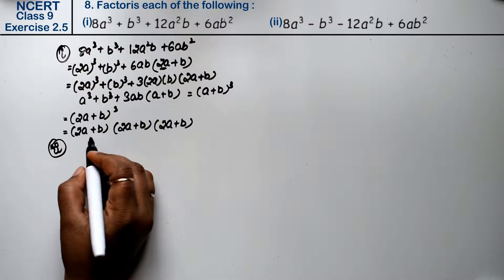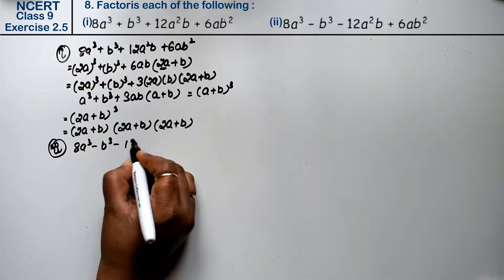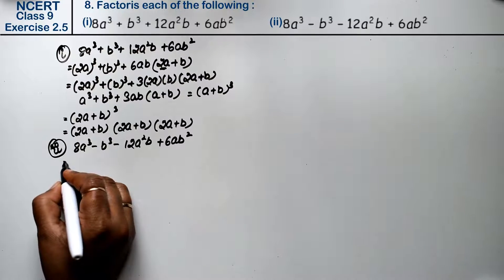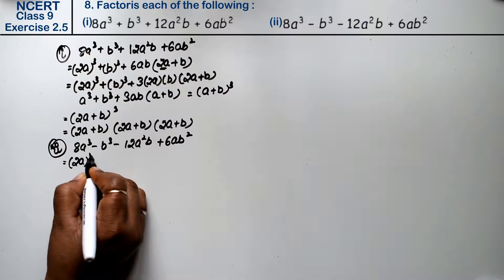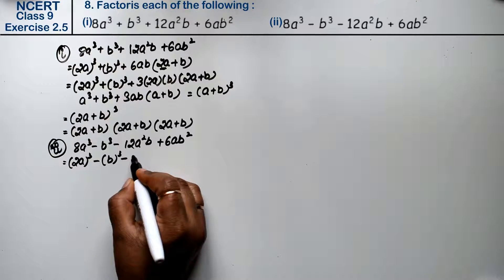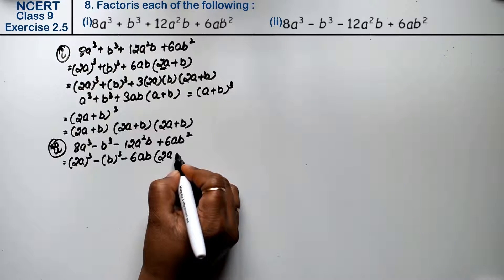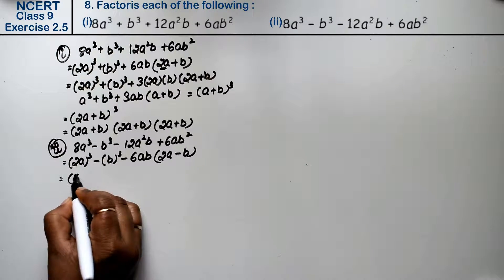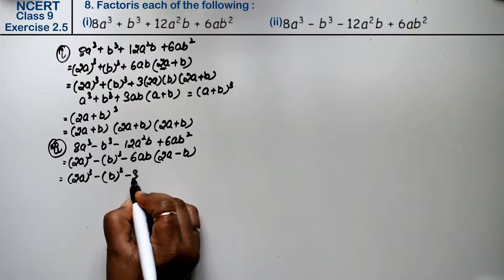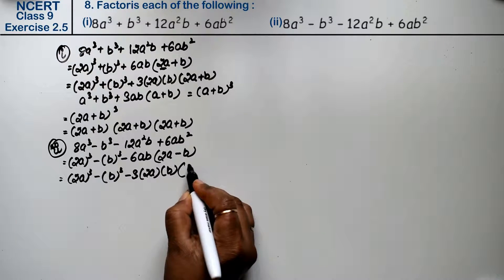Let's do the second part. Second part is: 8a cube minus b cube minus 12a square b plus 6ab square. Almost the same — only the sign is different. So we write this as (2a) whole cube, this as (b) whole cube. Minus is taken common and 6ab is taken common, so what remains inside? 2a minus b.